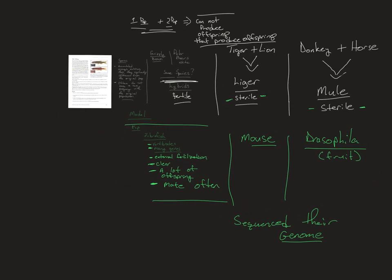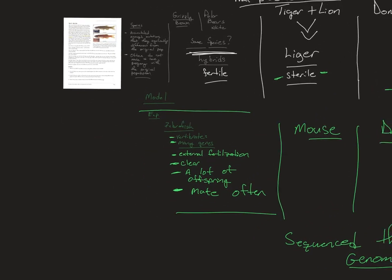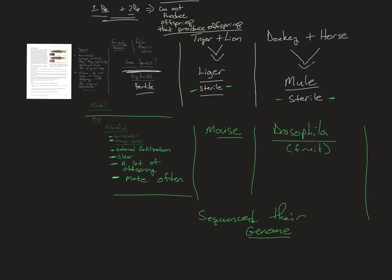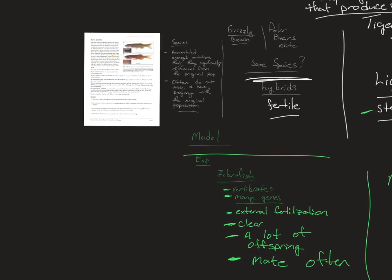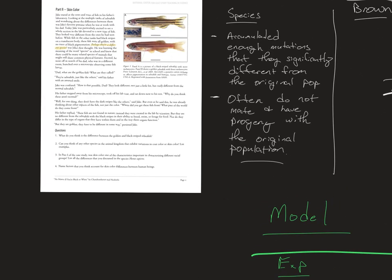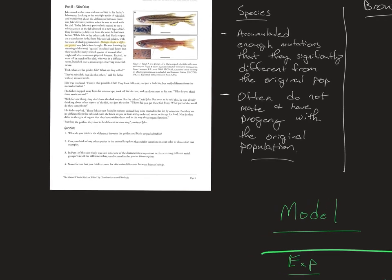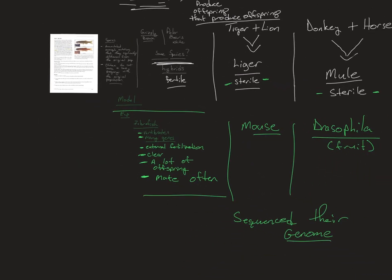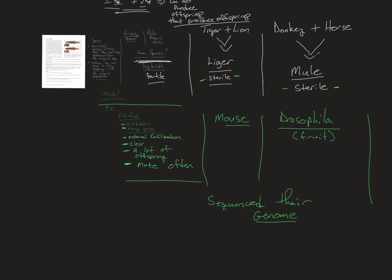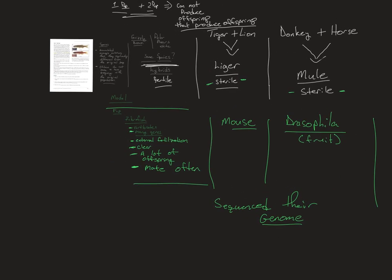Drosophila are not vertebrates or mammals, so you'd probably want to do experiments with them first because they're cheapest to upkeep and have the fastest reproduction and largest groups. They're good for studying how genes are inherited and how basic conserved genes work. Zebrafish are a little more modern and closer to humans, and the mouse is the closest. When choosing a model organism, it all depends on what you're trying to do. Other organisms like dogs and chimpanzees are even closer but more expensive with more ethical considerations.